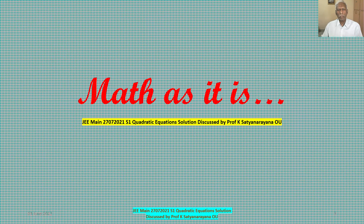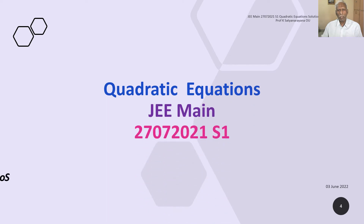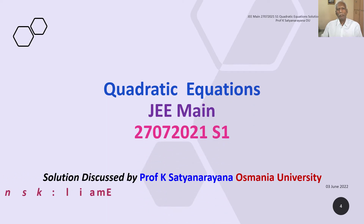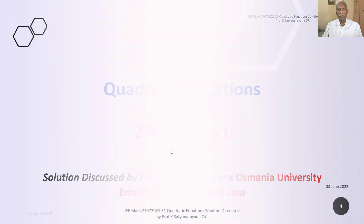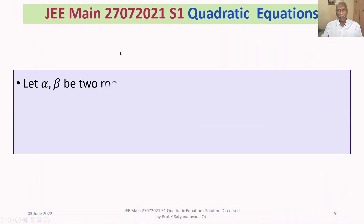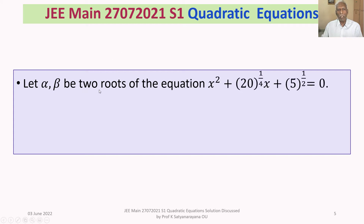We now discuss the solution of a problem from the section Quadratic Equations. The problem has appeared in Joint Entrance Examination Main held on 27th July 2021 in the morning shift. The problem is: let alpha and beta be two roots of the equation x squared plus 20 to the power of 1 by 4 times x plus 5 to the power of 1 by 2 equals 0.